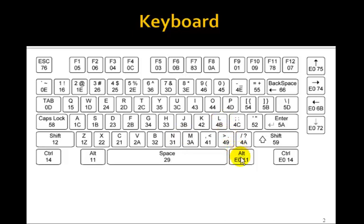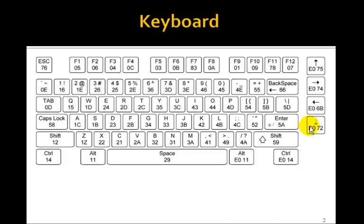Some keys, like the ALT key and the control key — this is the right ALT key — notice the left ALT key has a different make code. The cursor keys, the down, left, right, and up keys have two-byte make codes that all begin with an E0.